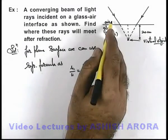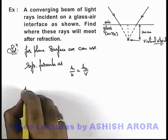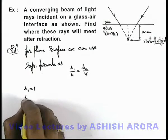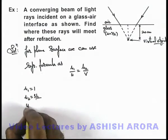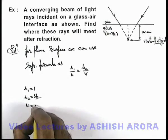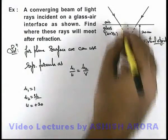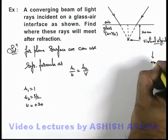And here in this situation, as light is coming from air and going to glass, here we can take mu 1 as 1, here mu 2 is equal to 3 by 2, and the value of u I can take as plus 20 if I am taking downward direction to be positive for my convention.